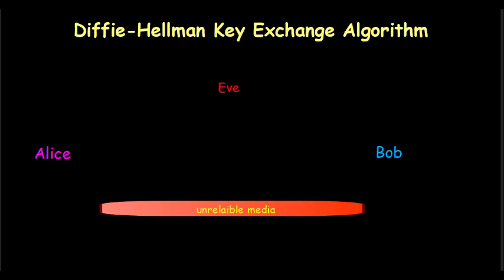What is the use of the Diffie-Hellman key exchange algorithm? Whenever two parties want to share any confidential information, they need to encrypt the data. For encryption we require two things: one is the algorithm, the other is the key. It is assumed that everybody knows the algorithm — the attacker as well as the two parties — but the key must be kept secret.